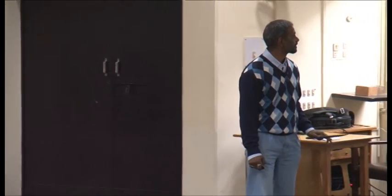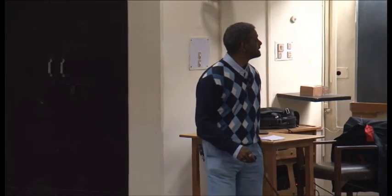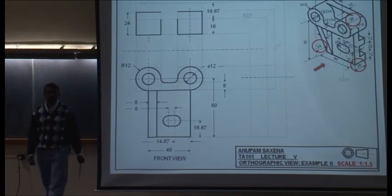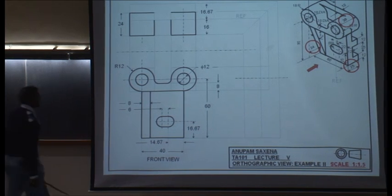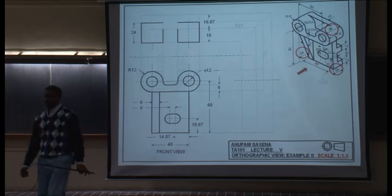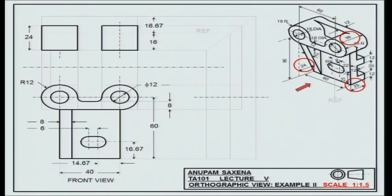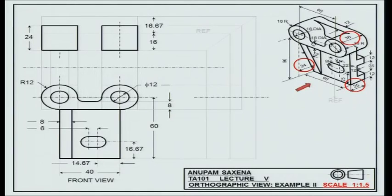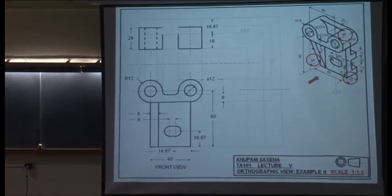Hold on — the extreme edges are long, the intermediate edges are short, these two edges are short. Why is that? Because of this feature. It becomes easier to have a reference line or reference plane and then draw things with respect to that plane. Take the projection of these circular voids upwards to the top view and use dashed lines to show the void in the top view — and likewise for the void on the right.